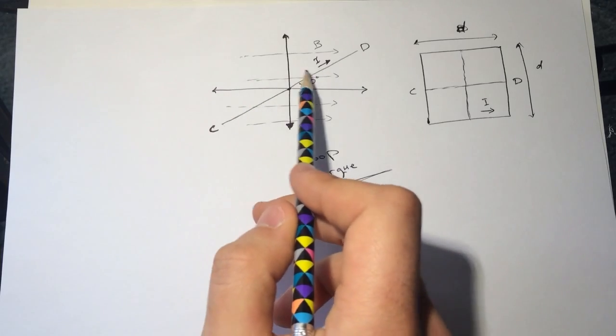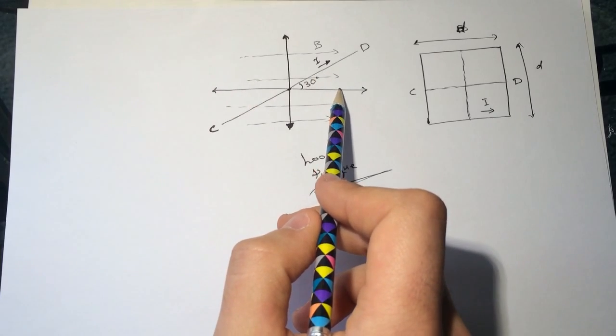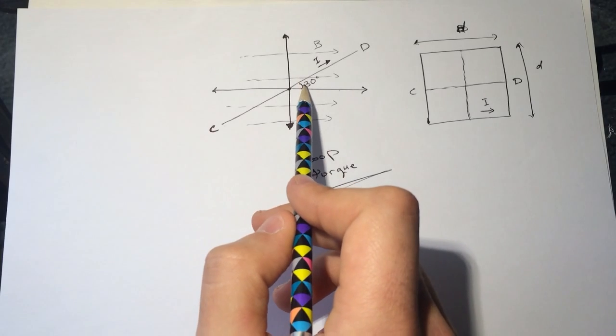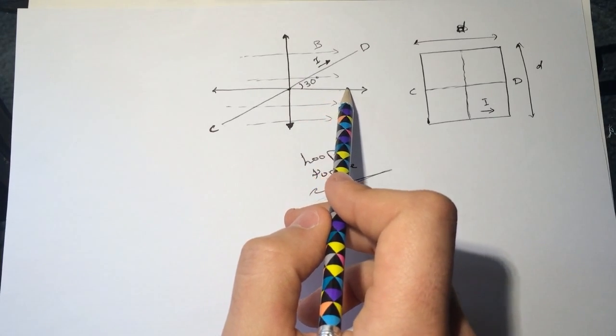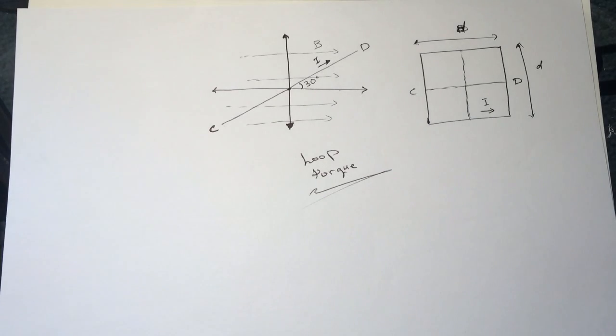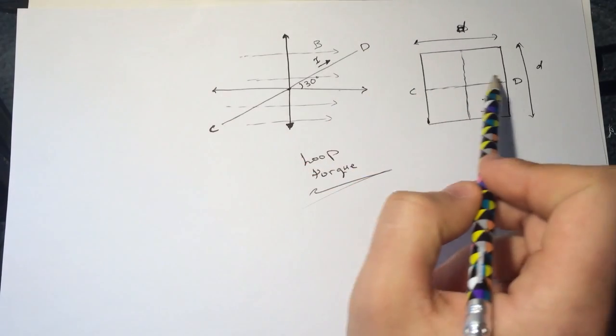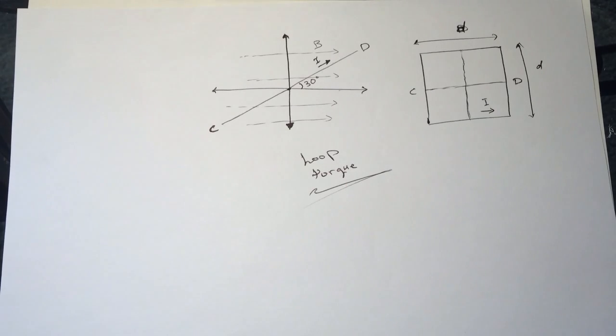The loop makes an angle of 30 degrees with the x-axis. They're telling us that there is a mass hung from one side of the loop, either at C or D, in the middle of this side, and we need to find what is the mass value.